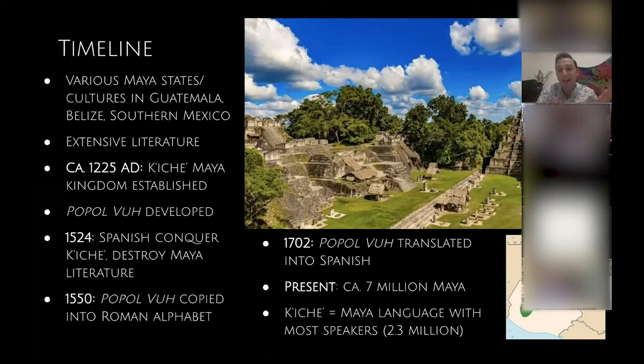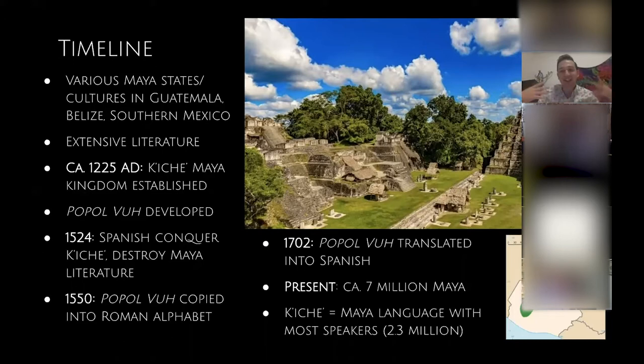Here's a quick timeline of how the Popol Vuh came to be as it is today. The image here is the ancient Maya ruins of Chichen Itza. It's important to point out that we have a tendency to think of the Maya as ancient and like lost or forgotten, which is really not true. The Maya never went anywhere — they still practice their traditions, speak their languages, and venerate stories like the Popol Vuh.